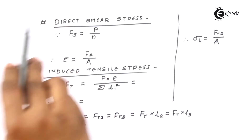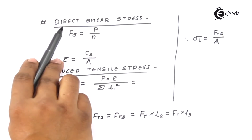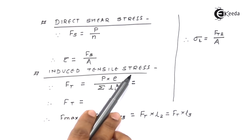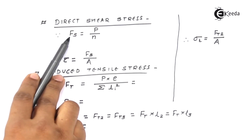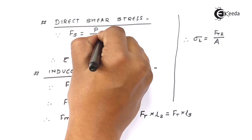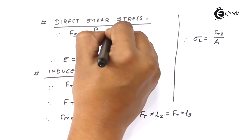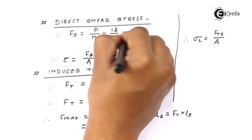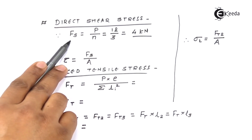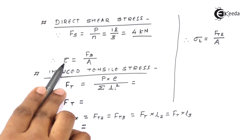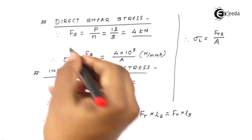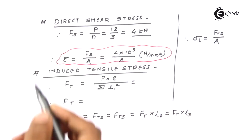The next important thing is to determine the stresses acting on the bolts. There are two aspects: one is the direct shear stress because of the loading, and second is the induced tensile stress because of the tilting of the joint. The shear force acting on one bolt will be the total force divided by total number of bolts — 12 kilonewton divided by 3 — giving 4 kilonewton. This 4 kilonewton is the load acting on one bolt, responsible for its shear, and shear stress is given by force divided by area.